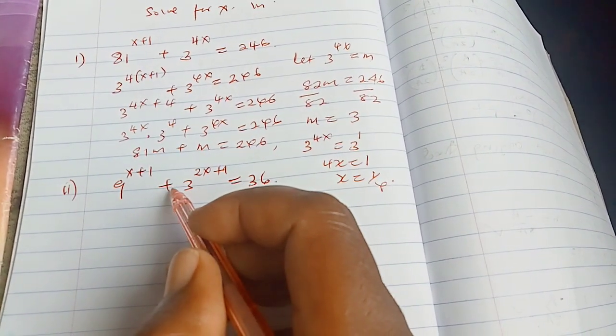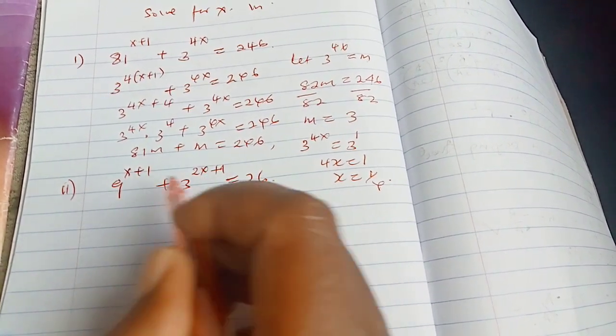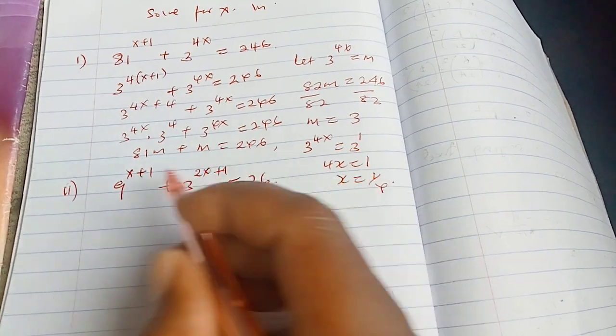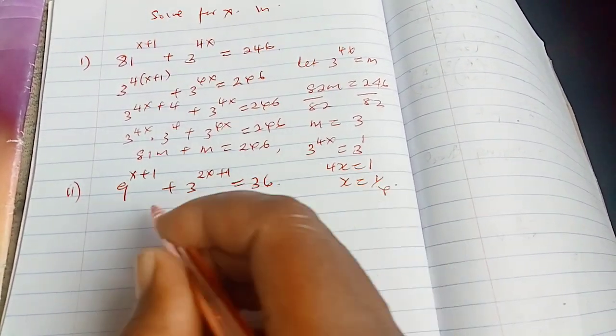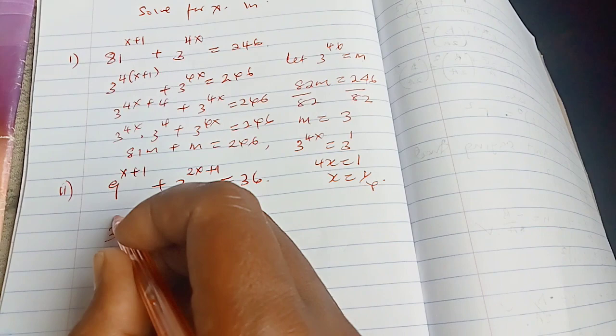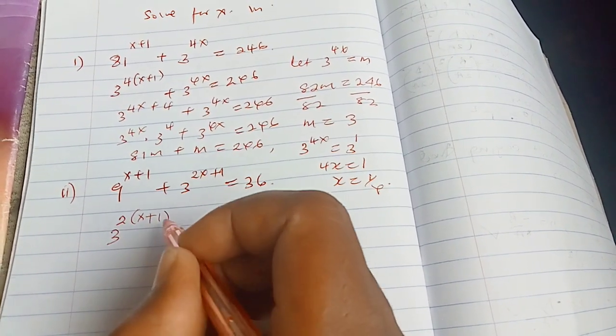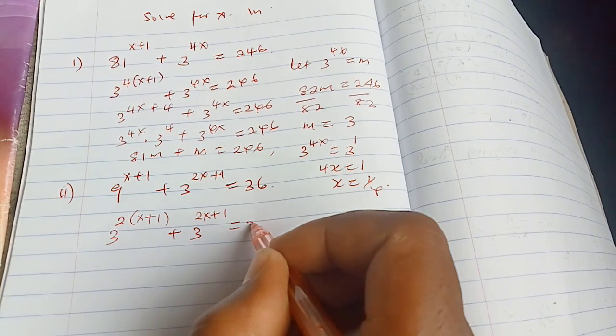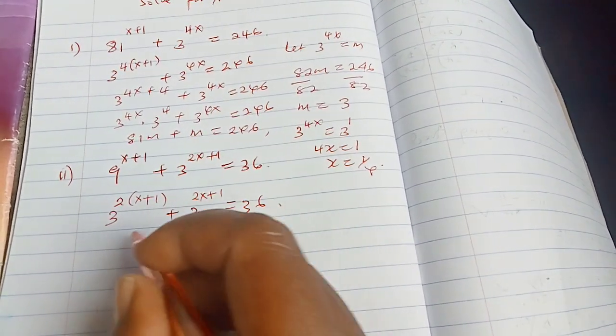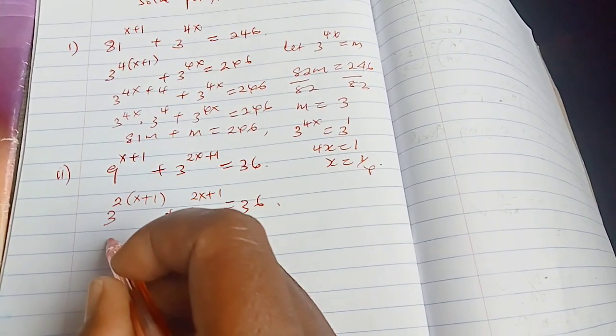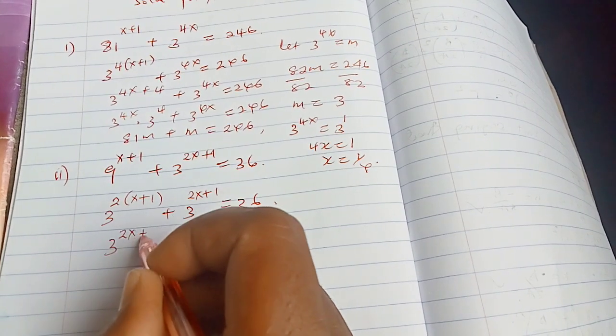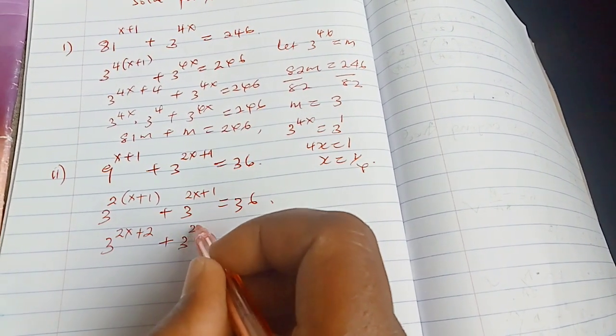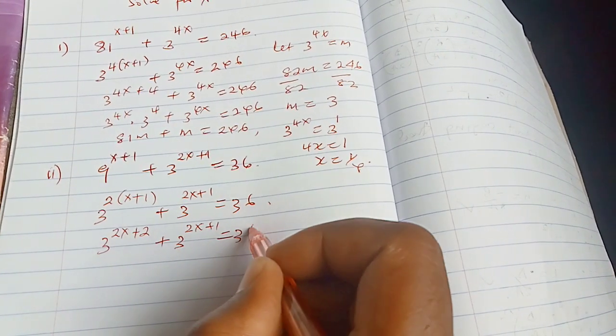We have a positive sign here which is also not defining the realm of laws of indices. So we are not going to interfere with the right hand side. So we go ahead and simplify 9 which is 3 to the power of 2 and opening the bracket of the powers, we have that and then that yields into something like that. So now we are going to have 3 to the power of 2x plus 2 distributing the powers across. So we have 3 to the power of 2x plus 1 equals to 36.